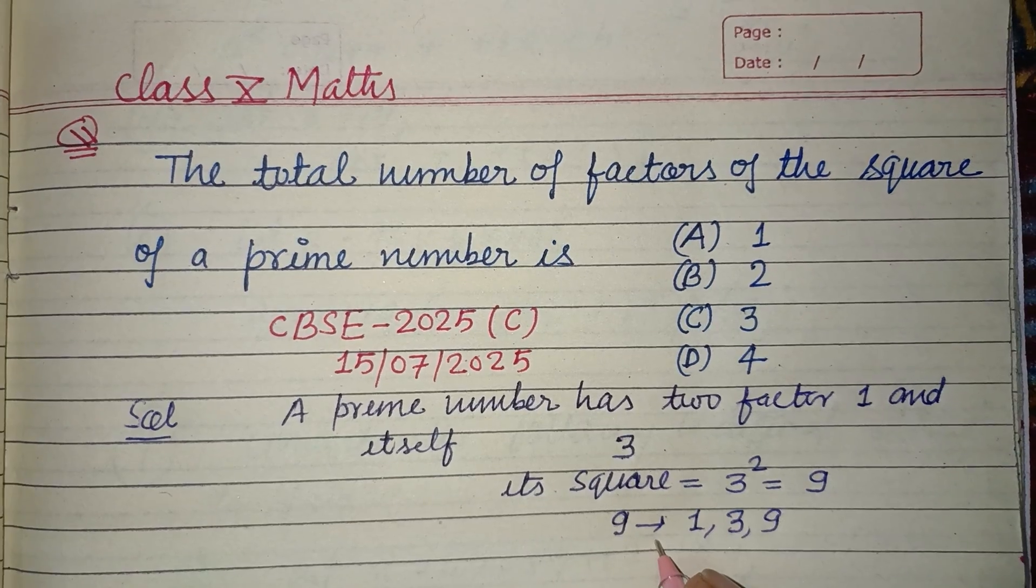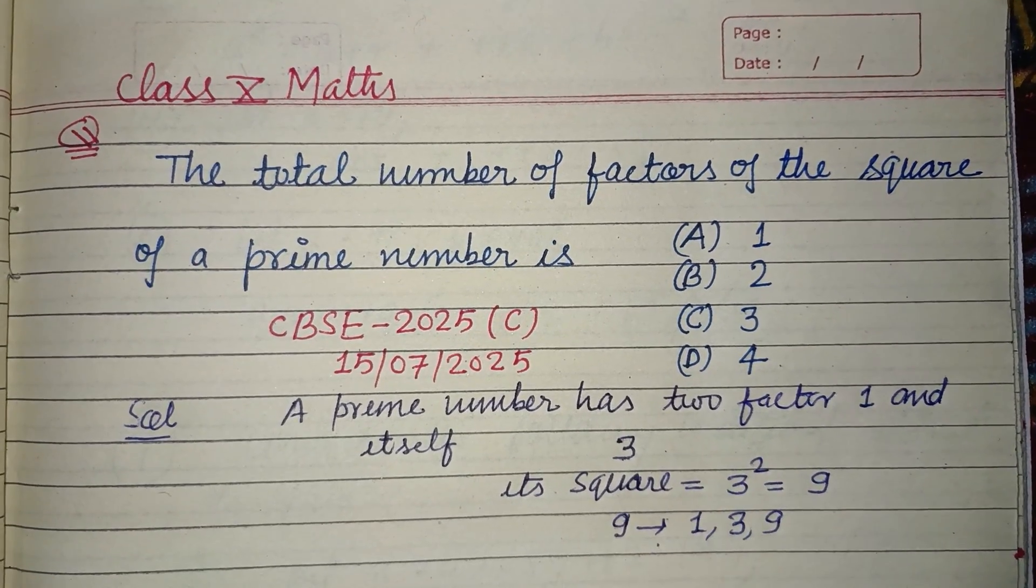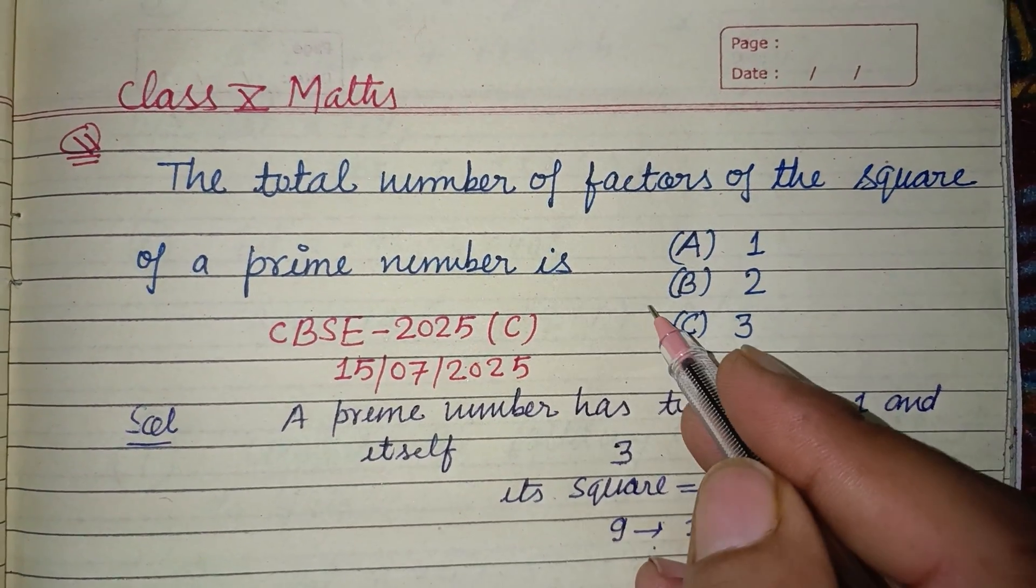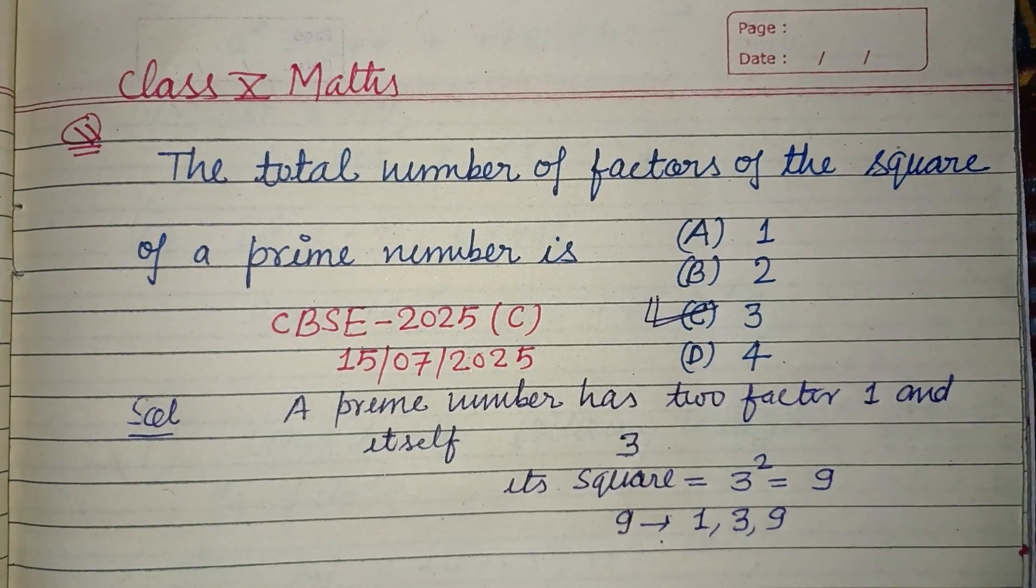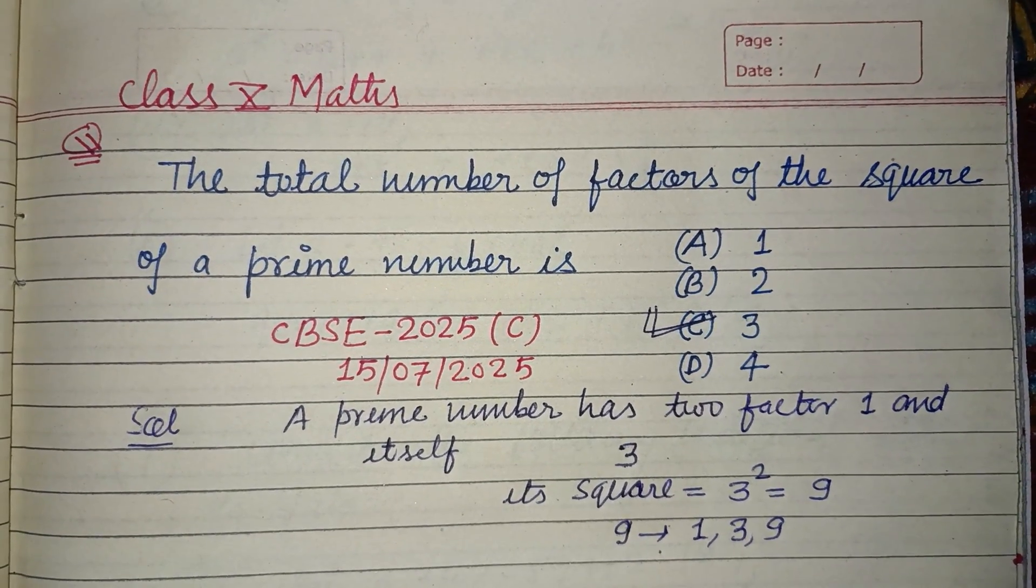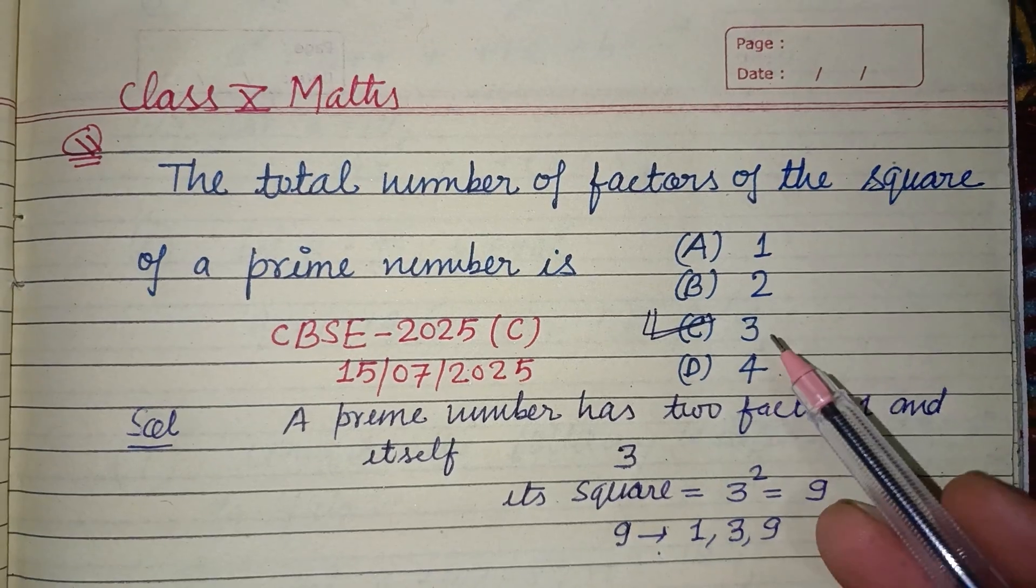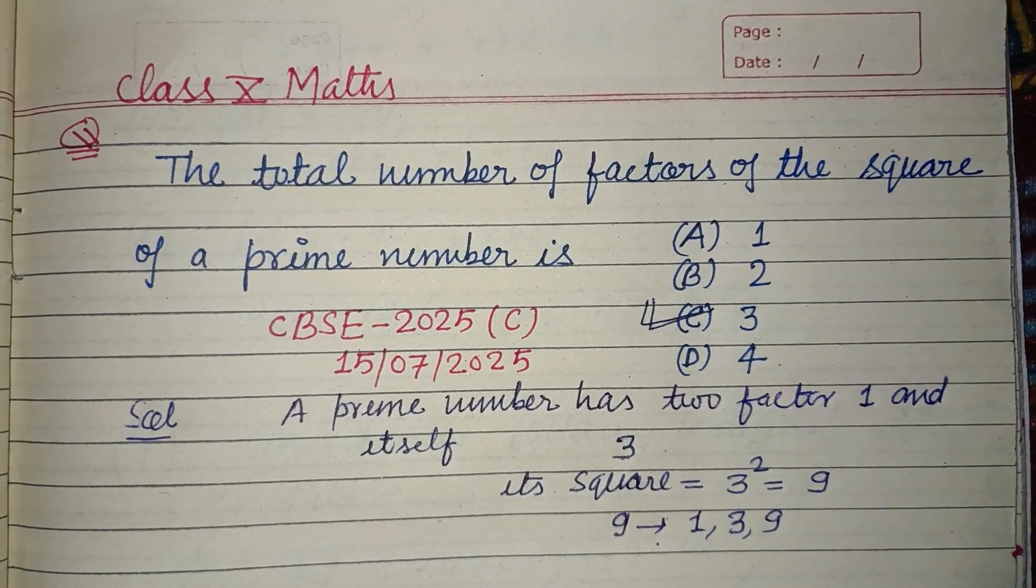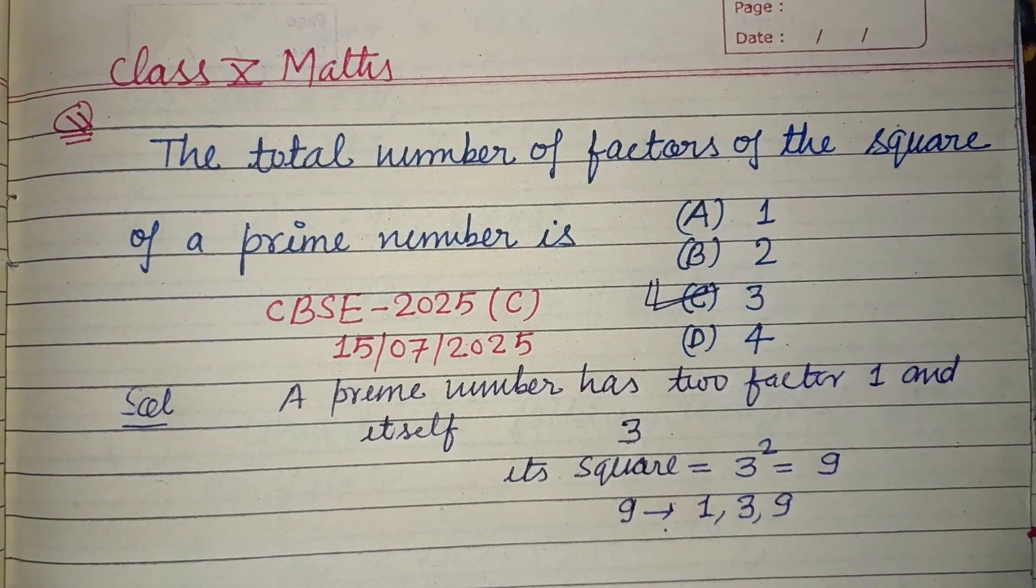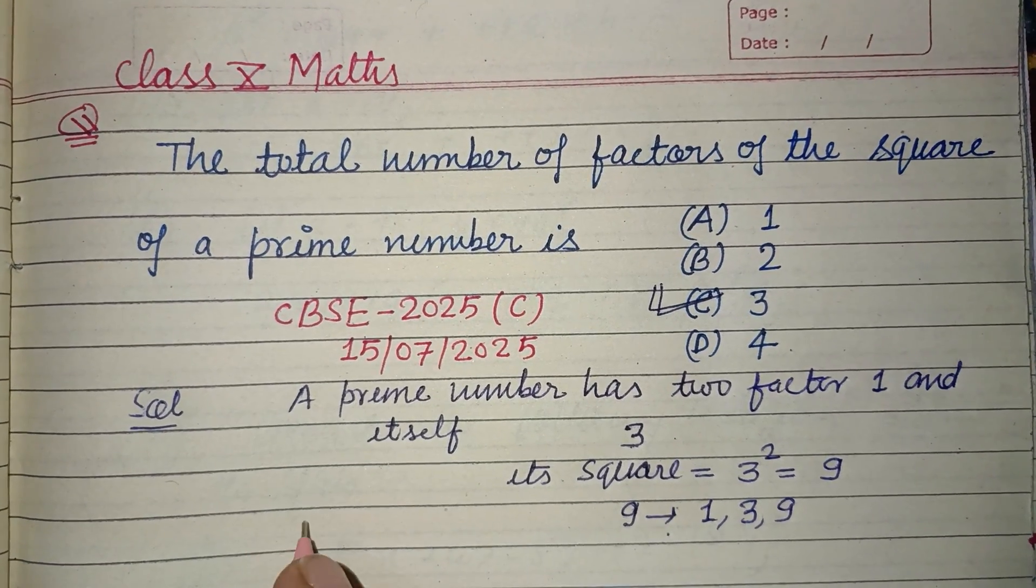So there are three factors of the square of a prime number. So C is the correct answer. A square of a prime number has three factors. I hope you got it.